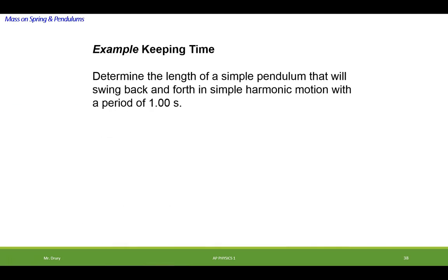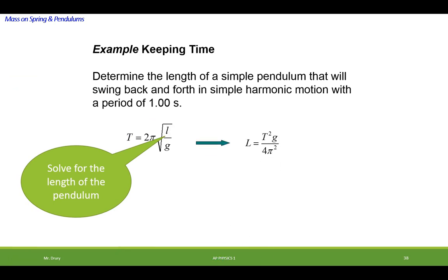So let's try an example. Determine the length of a simple pendulum that will swing back and forth in simple harmonic motion with a period of one second. So we want it to swing back and forth and have a period of one second. So there's our equation. I'm going to solve it for the length. Okay. And we're going to use our standard gravity. And that's how long the pendulum would have to be. It's our standard gravity.